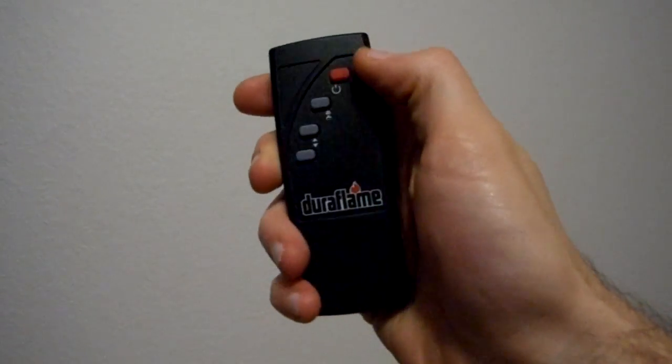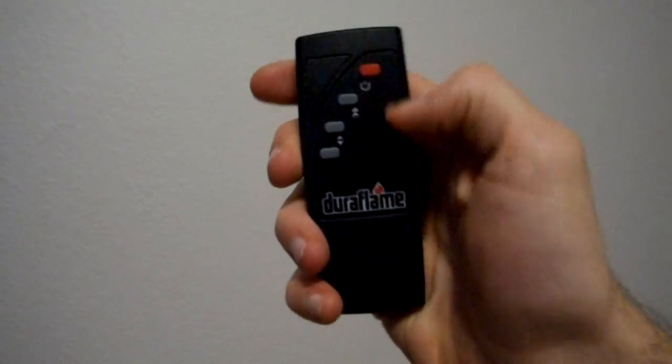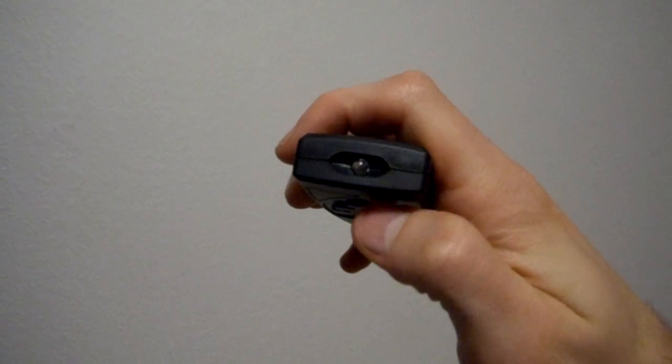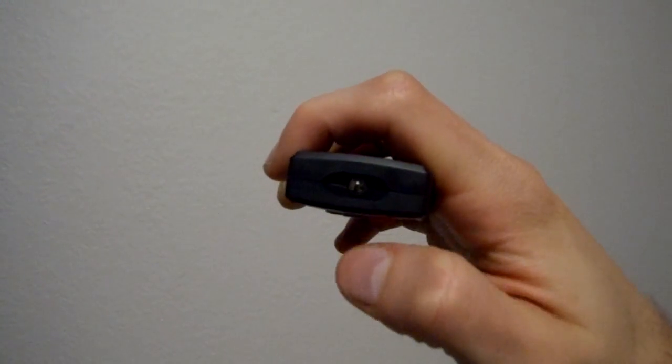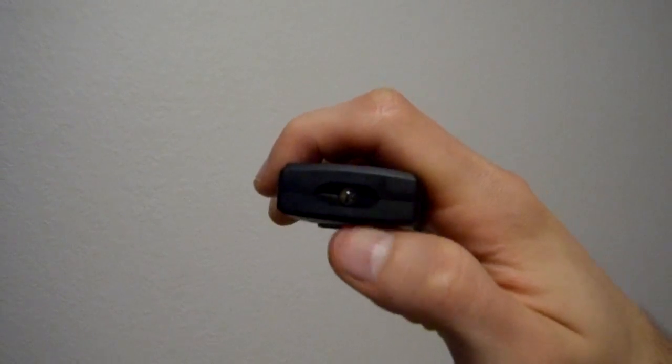Infrared remote controls work by flashing an infrared LED. People can't see infrared light, but digital cameras can, which explains why you can see it here. But how does the light actually transmit a signal?